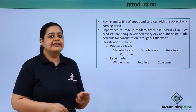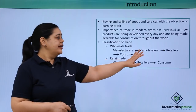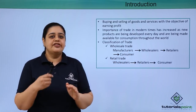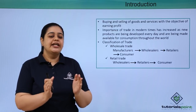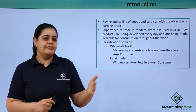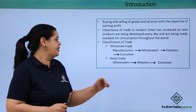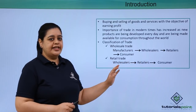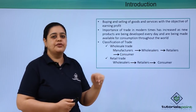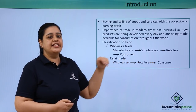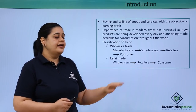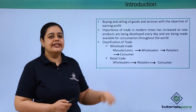Now let's see the classification of trade. When it comes to internal trade there is wholesale trade and retail trade, and both of these are different. The manufacturers — let's say the wheat producers — will approach the wholesalers. The wholesalers would buy from these manufacturers, and the manufacturers would then sell these goods to retailers. Let's understand the difference between wholesalers and retailers.